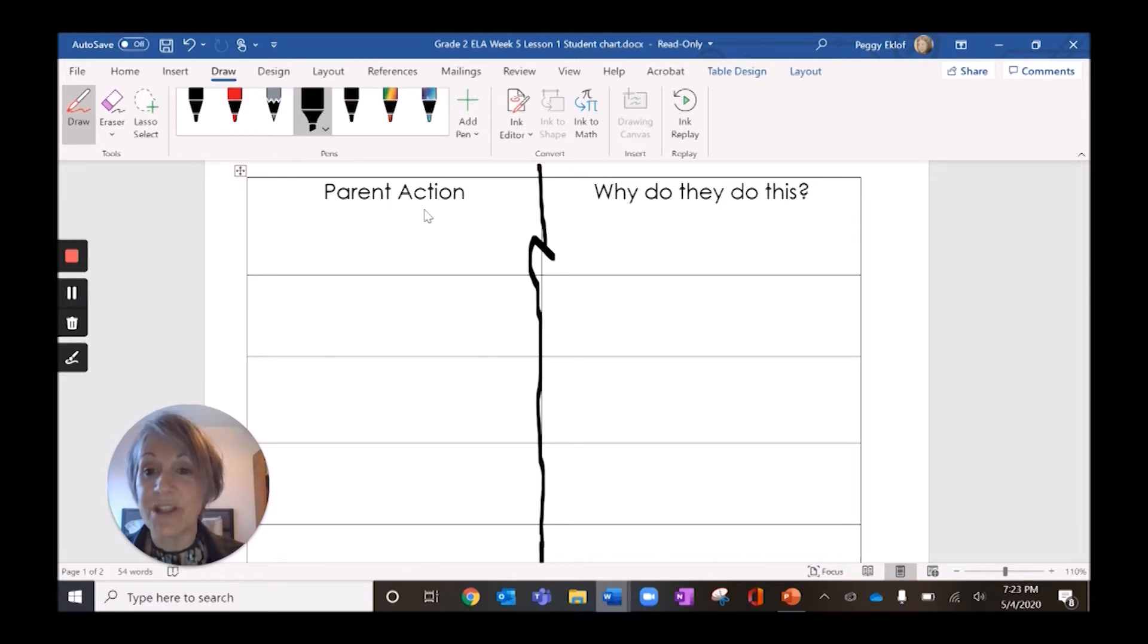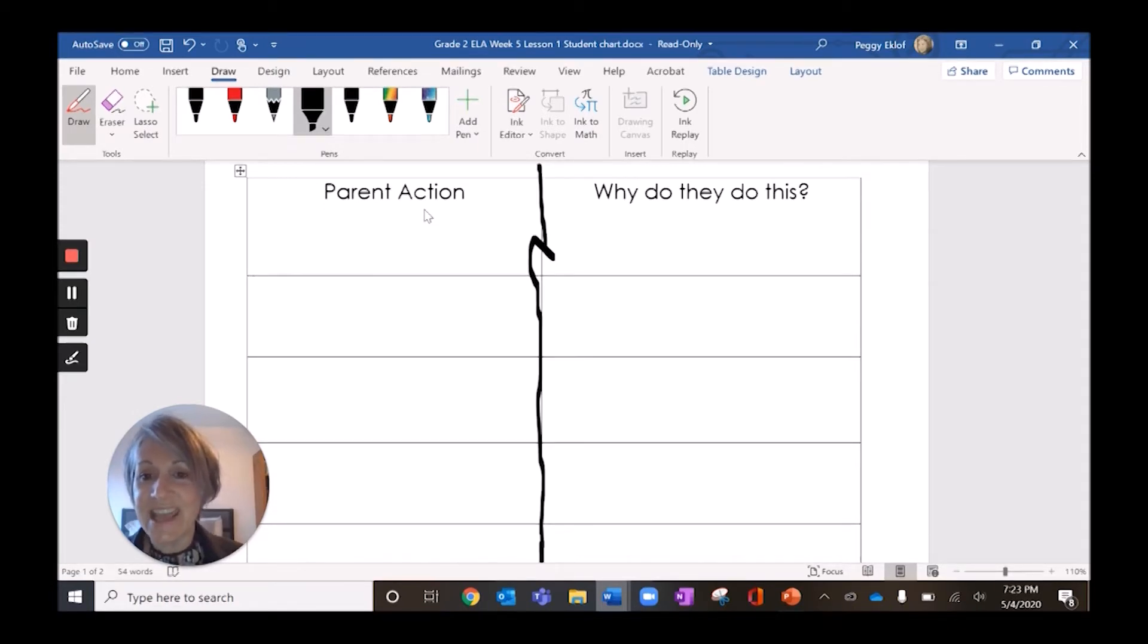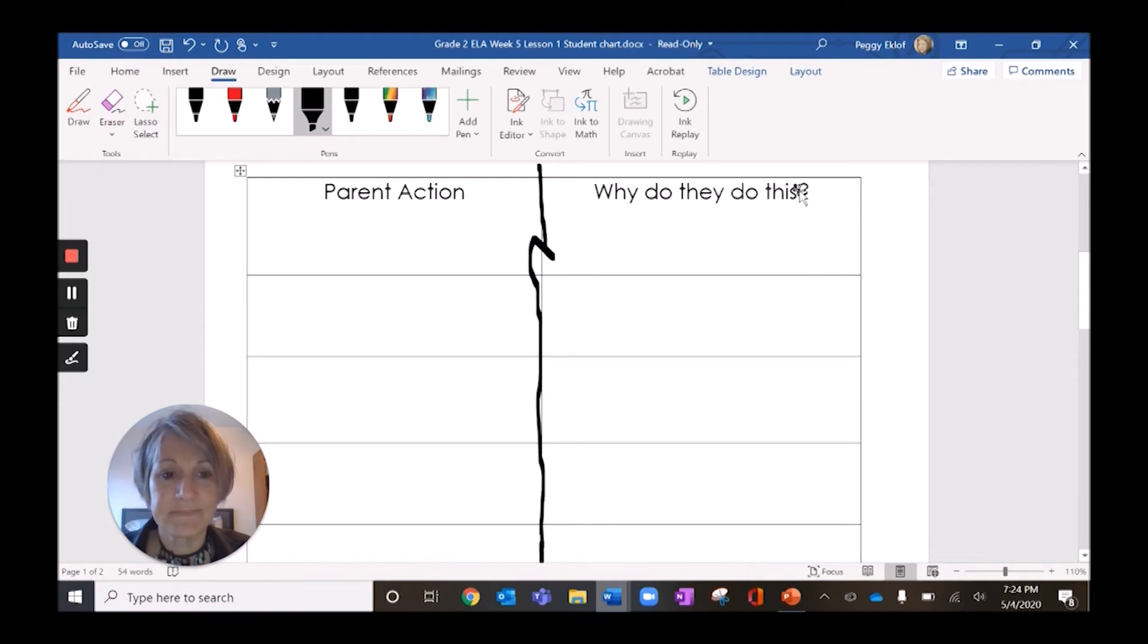Once you've got your line all the way down the middle of your paper, you can go ahead and start writing. On one side, we're going to record the parent's actions. So you can write parent action, P-A-R-E-N-T, and then action, A-C-T-I-O-N. On the other side, you can record why do they do this, or you could just simply write the word why. Why with a question mark. Why do the parents do this?